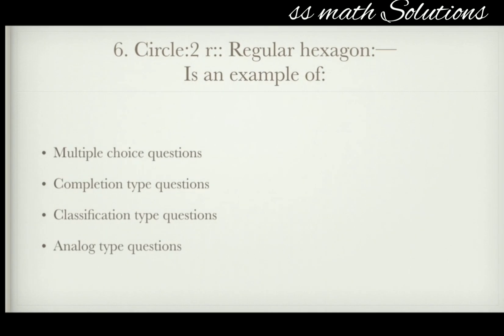Circle is to pair as regular hexagon is to dash — is an example of which type of question? Options: multiple choice question, completion type question, classification type question, analogy type question. The answer is option 4 — analogy type question.